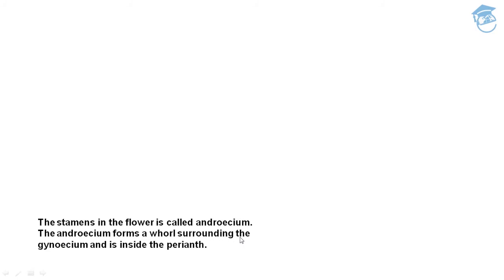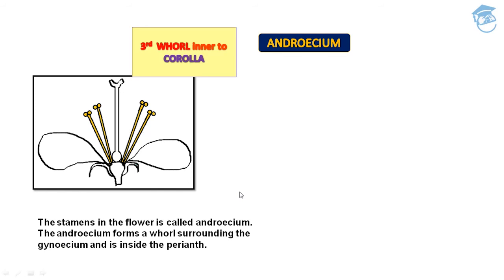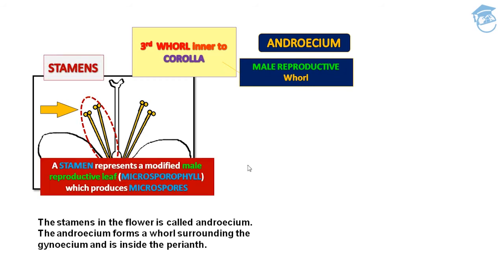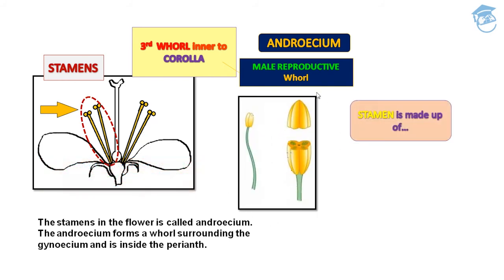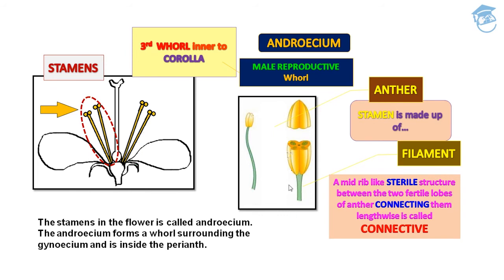Androecium is the male reproductive part — the stamen of the flower. It forms a whorl surrounding the gynoecium and is the third whorl, inner to the corolla. Stamen represents a modified male reproductive leaf called microsporophyll, which produces microspores. Each stamen is made up of anther and filament. The midrib-like sterile structure between the two fertile lobes of the anther, connecting them lengthwise, is called the connective.